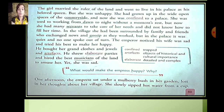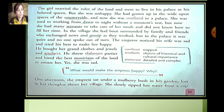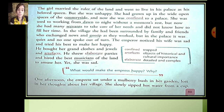So what would make the empress happy? One afternoon, the empress sat under a mulberry bush in her garden, lost in her thoughts about her village. She slowly sipped hot water from a cup. She was thinking about her village, her friends, their gossip, their news — imagining all her life back there. And slowly she sipped hot water from a cup.